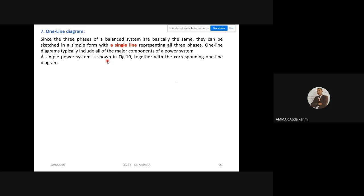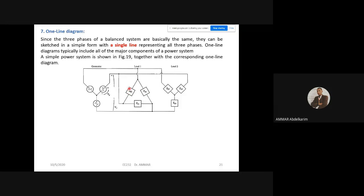A simple power system, for example, if we have this power system, we have a source and we have two loads connected in parallel, of course. One is delta-connected and the second one is Y-connected. The one-line diagram will be like this. So this is a simplified representation. This is the source, the generator. And this is the first load, which is delta-connected, and this is the second load, which is Y-connected.